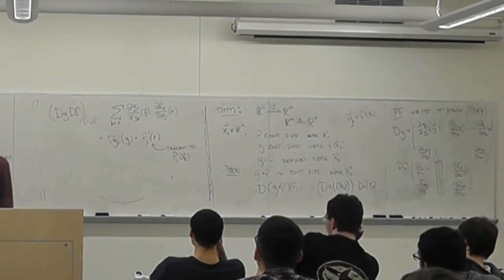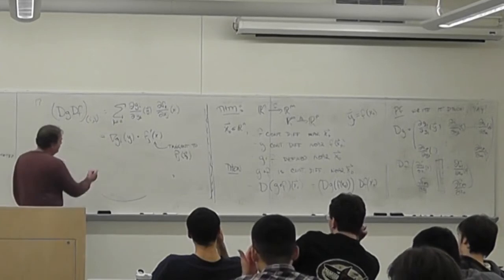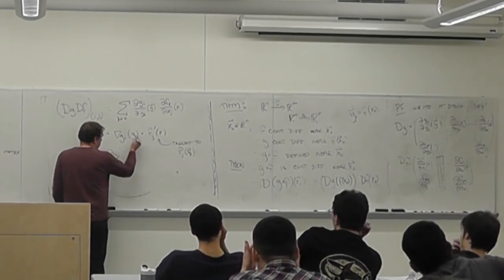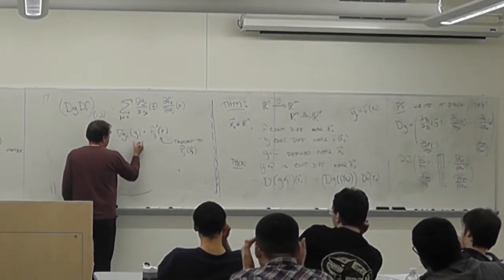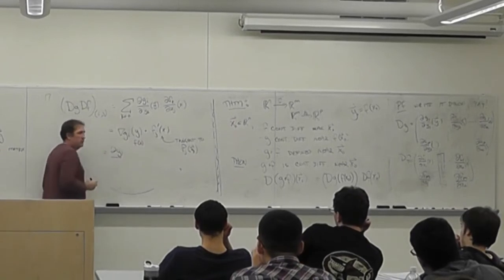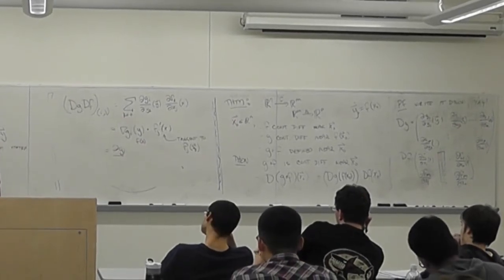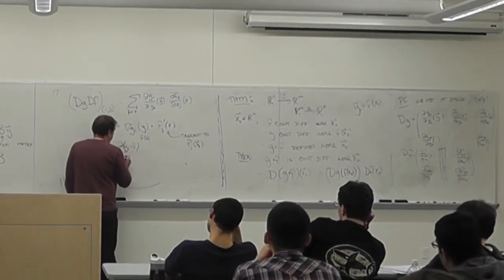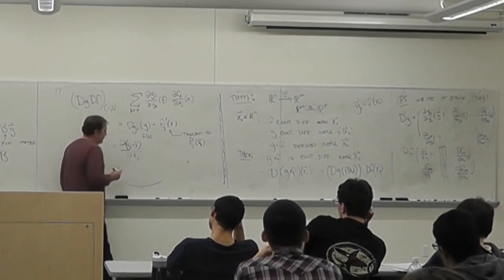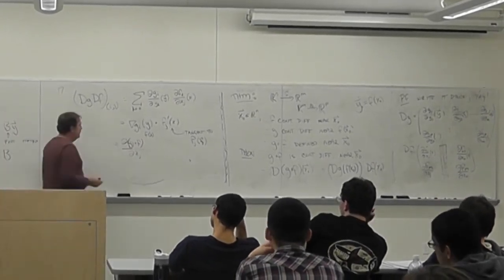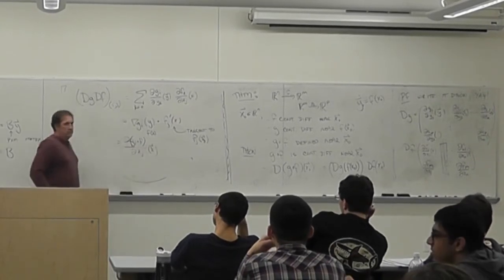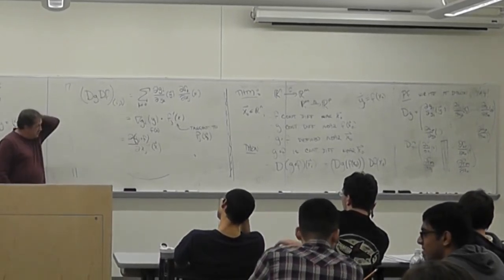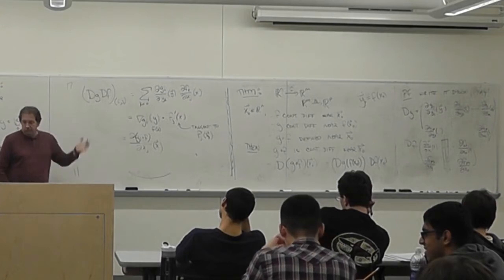So this is just the partial of G_i composed with F, with respect to X_j, evaluated at X. That's it — it's just the chain rule written out in coordinates, confirming the matrix multiplication formula.